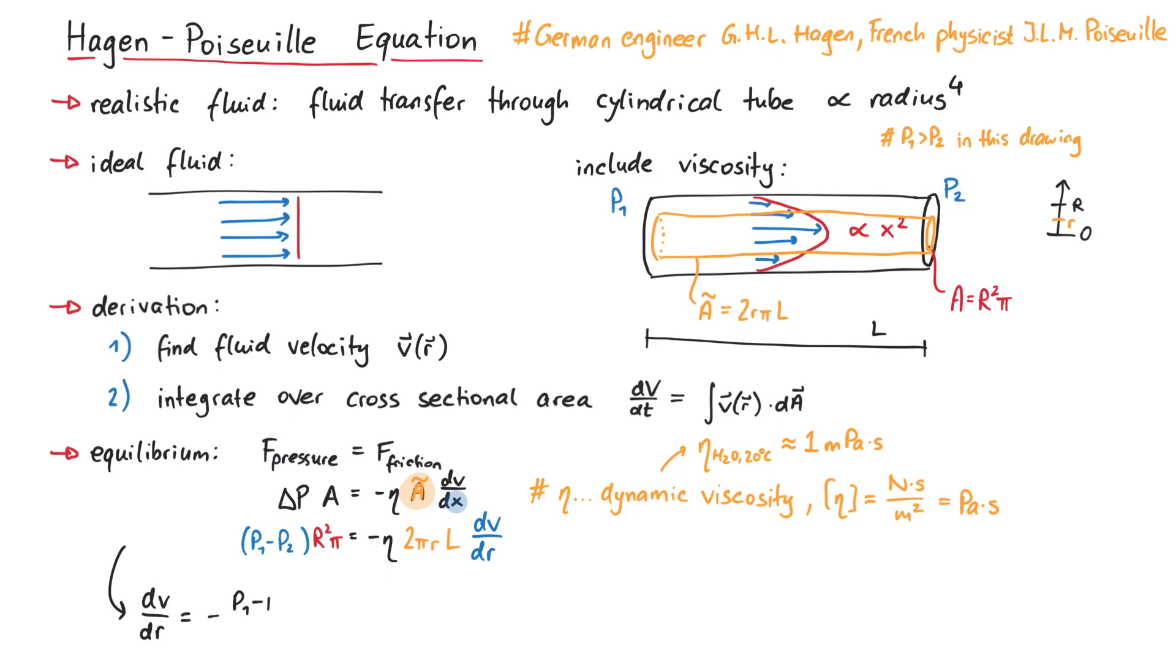We can solve for the velocity by integrating over r, which is a simple integration. The integration constant c is determined via the boundary condition that the velocity at the edge of the tube must be zero, since the walls don't move. This leads to the following result, which shows the parabolic shape we mentioned earlier.